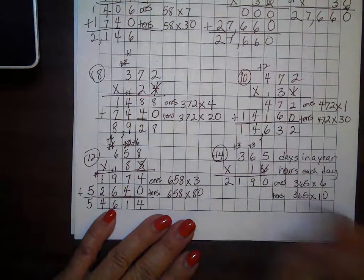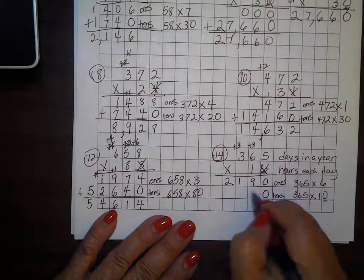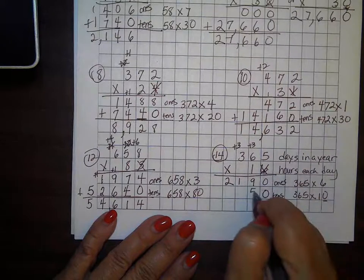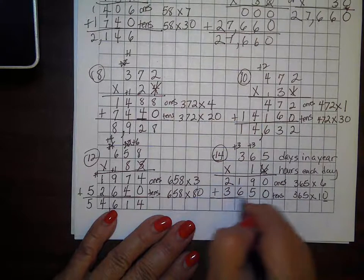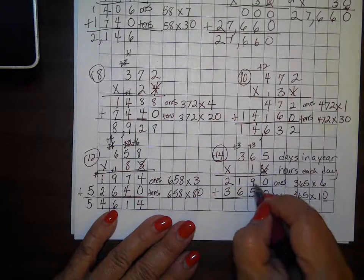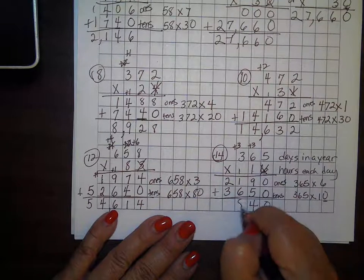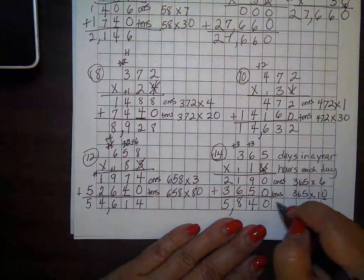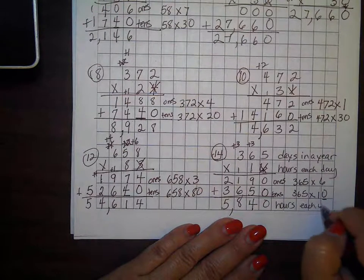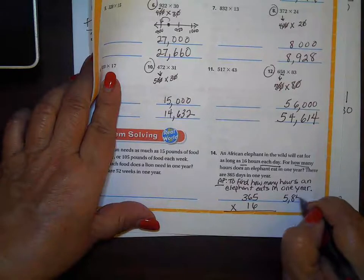I'm done with the ones, crossing out my 6, and bringing down the zero as my hero. Now I'm writing 365 times 1: 1 times 5 is 5, 1 times 6 is 6, 1 times 3 is 3 — giving 3,650. Adding those up: 5, then 9 plus 5 gives 14 so I carry 1, making 8, then 3, 4, 5 — for the year it's 5,840 hours. That's a lot of hours to be munching!